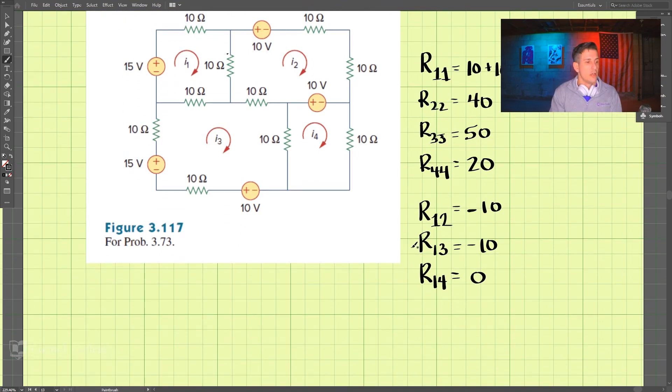And then we continue on between two and three, and we write that as a negative, that is negative 10. And between two and four there is no resistor, so that is zero. And then the last one, between three and four, there's just one which is negative 10.